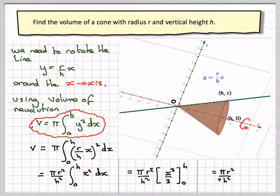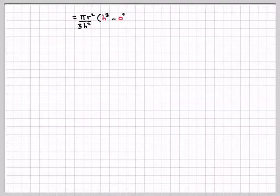So we get x cubed over 3. And then we have to put the limits in h and 0. So we've got pi r squared over, and I've taken the 3 out now as well, 3h squared. And putting the first limit in, we get h cubed minus 0 cubed. Just writing that out again.